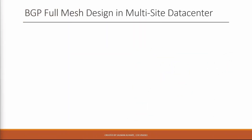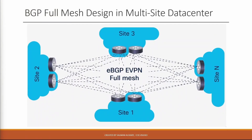Let's see the data center usage. Full mesh design in multi-site data center: EVPN multi-site architecture requires the border gateways from a local site to peer with other border gateways at remote sites. For example, site one has two border gateways for redundancy, and each of them should peer with border gateways in other sites. This full mesh requirement is not mandatory for proper exchange of information, but given the various failure scenarios possible, a full mesh is the recommended configuration.